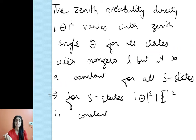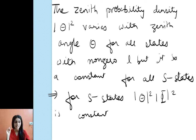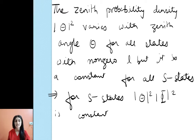Next, |Θ|², called the zenith probability density, varies with the zenith angle for all states with non-zero L. If L = 0, this probability is constant. So for all S states the zenith probability is constant, and for P, D, and other states it will vary. For the hydrogen atom in the S state, the zenith probability density is also constant.